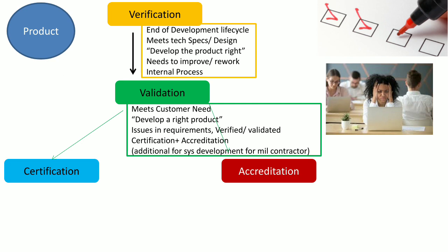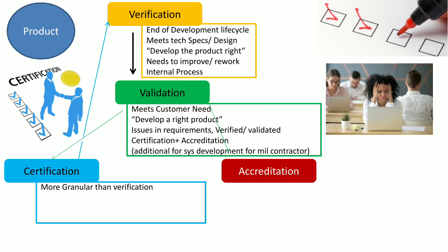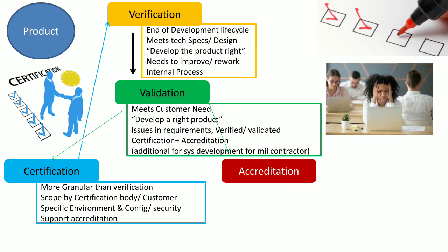Certification is followed by accreditation — we perform certification first and then accreditation. Certification is basically the technical evaluation, and accreditation is a management approval. Certification is very much like verification but more granular, because the certification criteria is set by the certification body or the customer. We check whether a product is suitable to be deployed in a specific environment, since the same product can be deployed in different configurations in different environments. A product may be suitable for one environment but not another, and this certification supports the decision taken in the accreditation process by management.